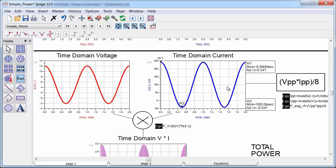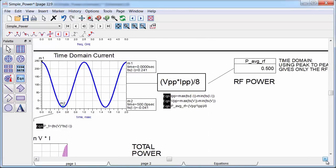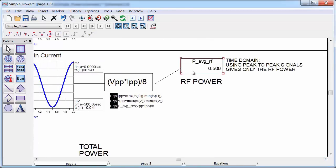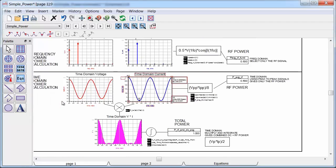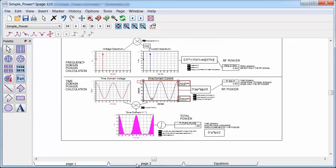So what if I only want the RF power? Well, if I consider the peak-to-peak voltage and current signals instead of the peak signals, then I'm left with only the RF power. So in the time domain, using this approach can allow you to easily separate RF from DC. And don't worry if you didn't catch exactly how I calculated all of these things. Again, I'll provide a way to download this workspace at the end of the presentation, and you can see exactly how I calculated the power in these different ways.